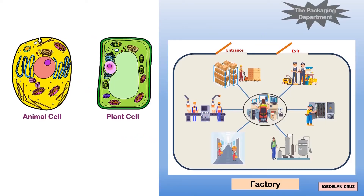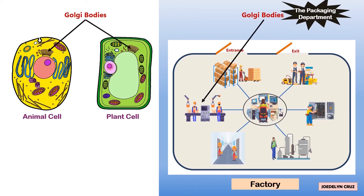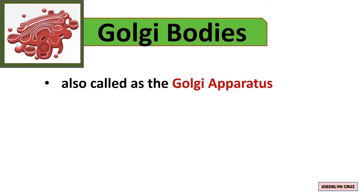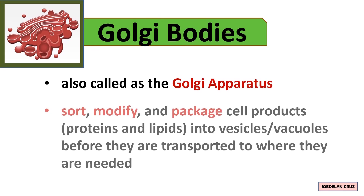The packaging department in the factory represents Golgi bodies. Inside this room, the products of the factory are sorted out and packaged, ready to be delivered to different locations. Golgi bodies are also called the Golgi apparatus. They are the organelles that sort, modify, and package cell products such as proteins and lipids into vesicles or vacuoles before they are transported to where they are needed.